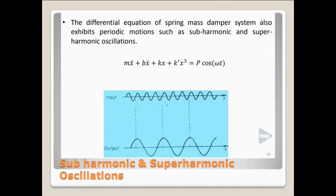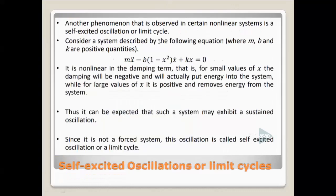For a spring-mass-damper system, sub-harmonic and super-harmonic oscillations occur. When a fixed amplitude and frequency input is applied, the output may be at a different frequency — it can be a multiple or sub-multiple of the input frequency. The output is a complex signal consisting of many frequency components. Fourier analysis is normally used to analyze what frequency components are present in the output of a non-linear system when subjected to an input.